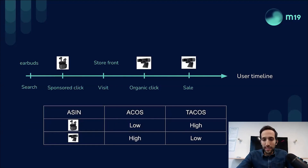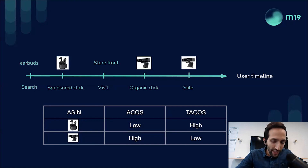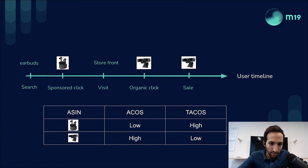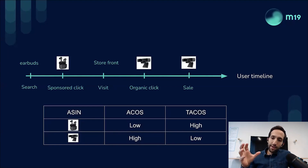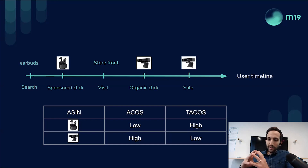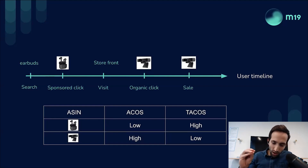So the click happened on the earbuds, the cost is linked to the earbuds, and the sponsored sales are linked to the earbuds — but it's another product with the price of that other product. If we look at metrics like ACoS, the earbuds ACoS will be low — lower than it should be — because we are reporting a sale for a product more expensive than the earbuds. The total ACoS for earbuds at ASIN level will be high, since the costs are attributed to earbuds but the total sales are not.